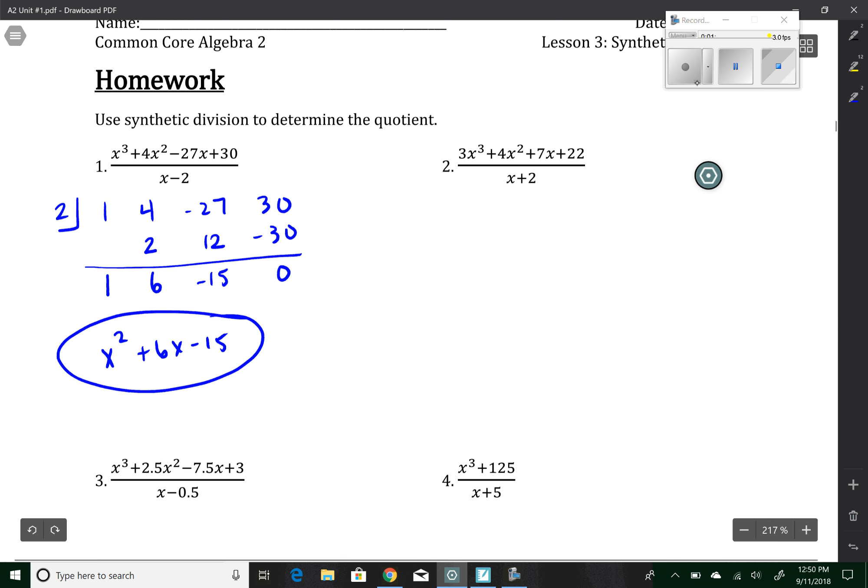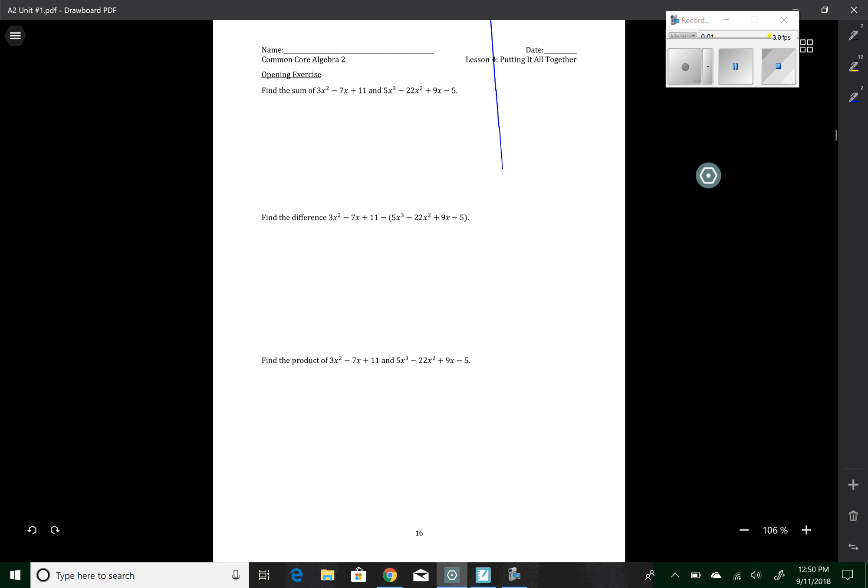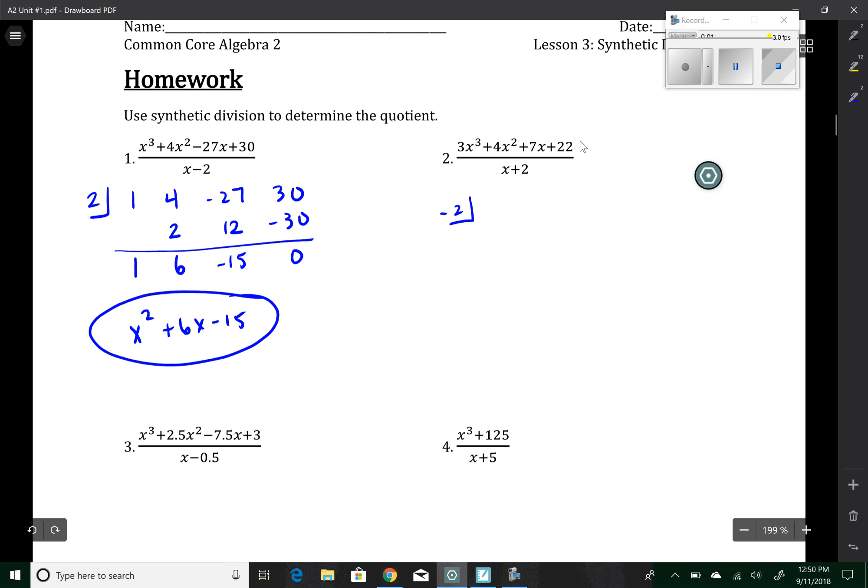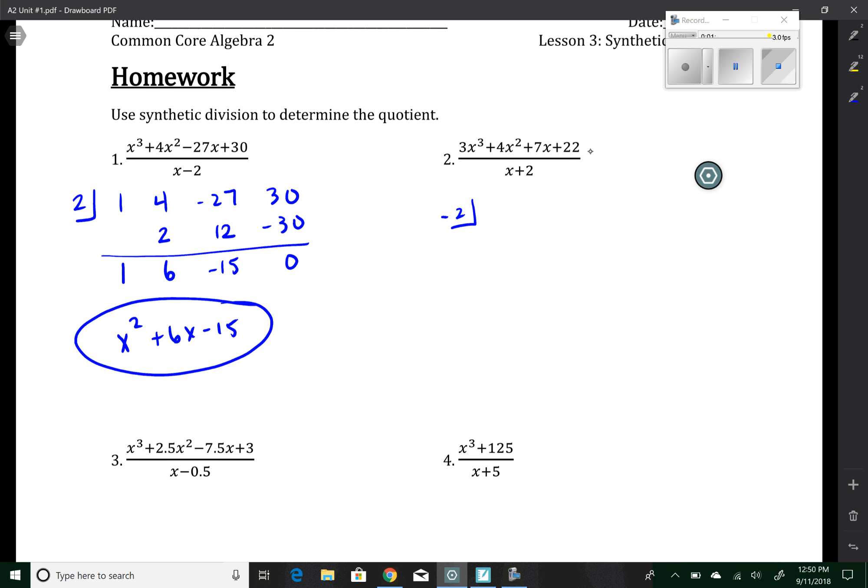Let's try another one. So the number that makes this zero is negative two. I'll put in my coefficients, three, four, seven, and 22.